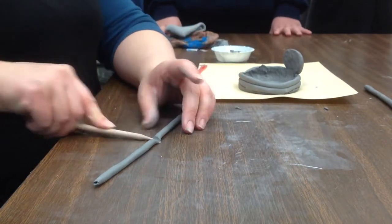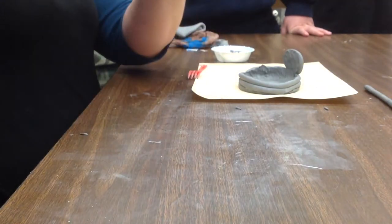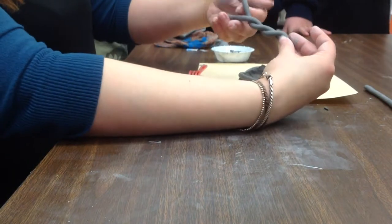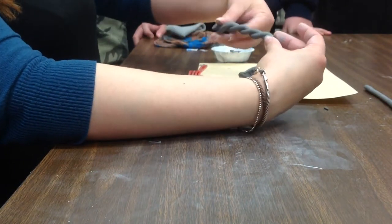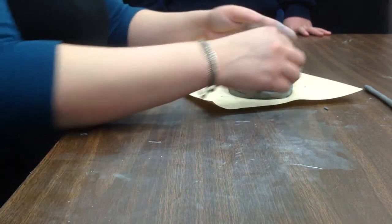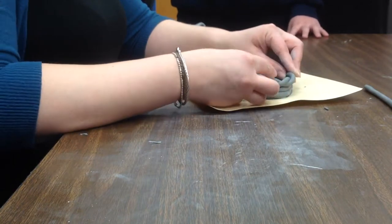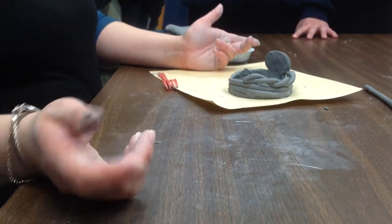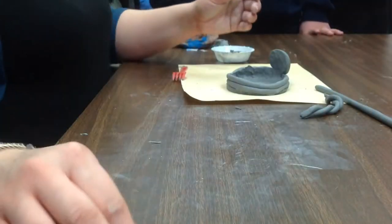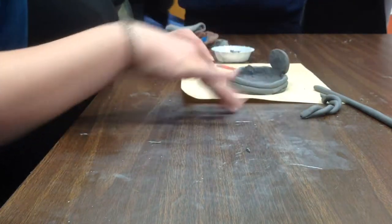This is kind of short to do it with, but I'm going to try to show you a twist. Pinch two ends together and twist. Then when you go to attach it, what do you have to do? Score and slip. So I can't just stick it on there and hope that it stays. I have to actually attach it. These coils - I think that's probably all I'm going to have you do, are those two techniques.